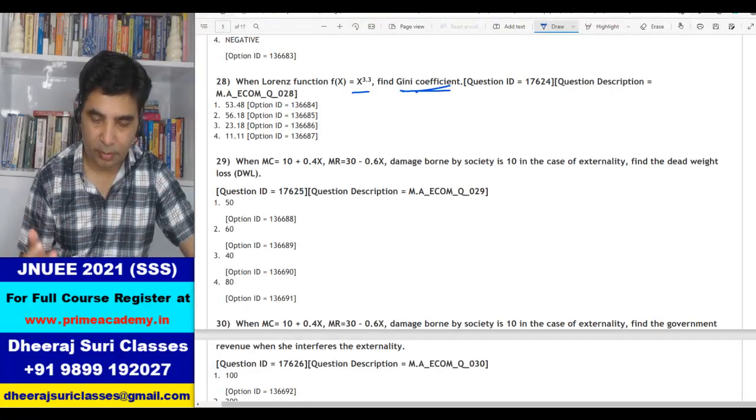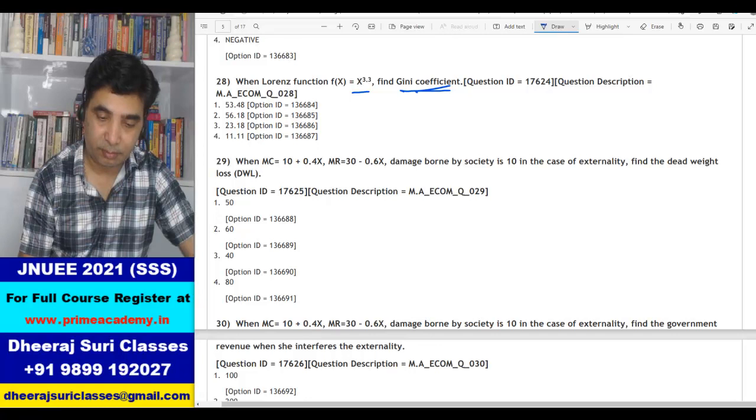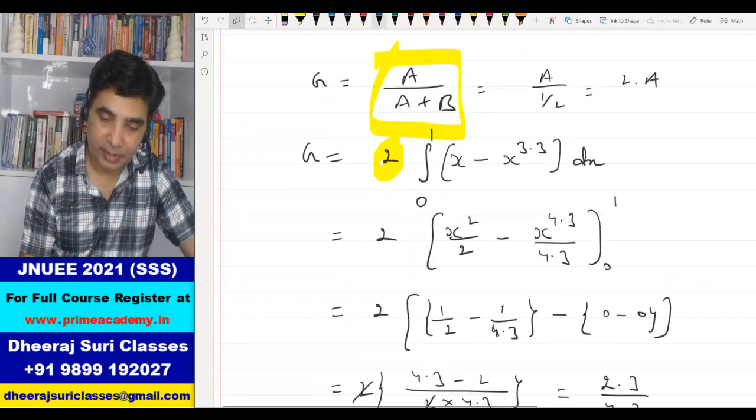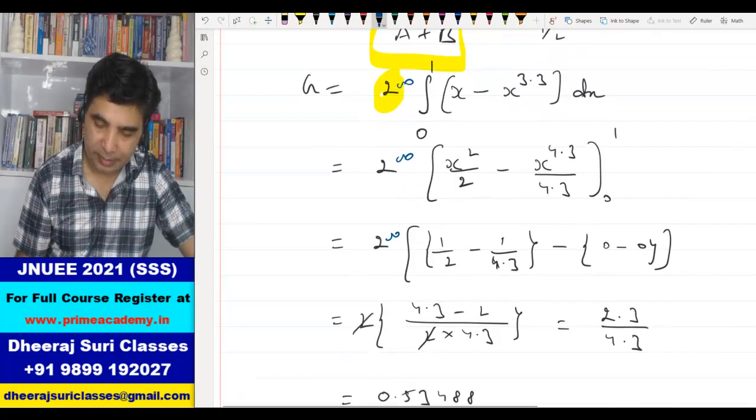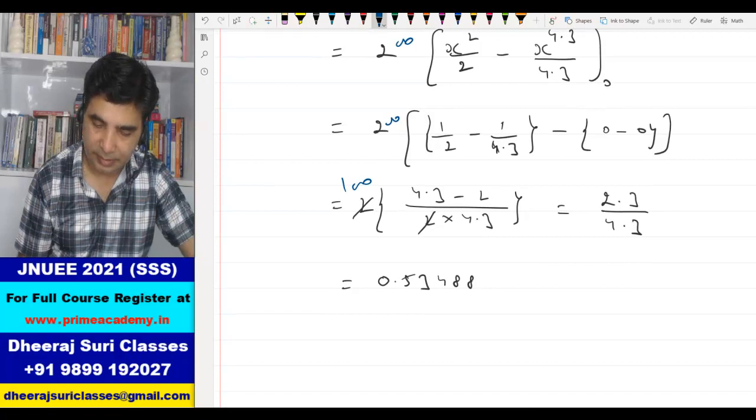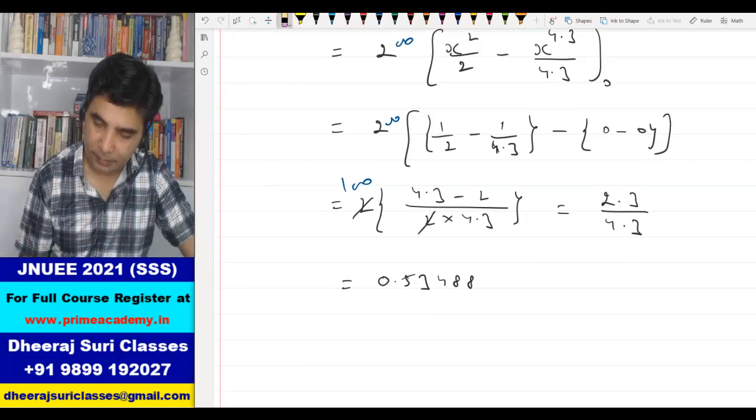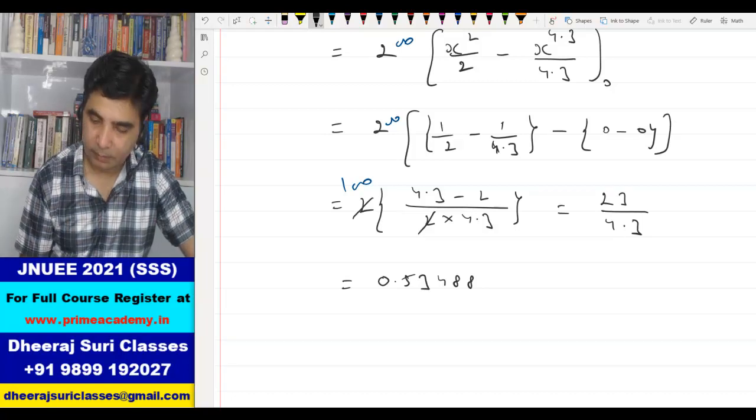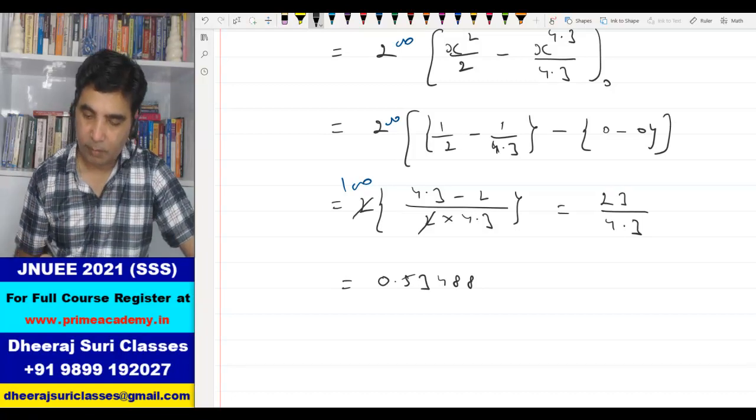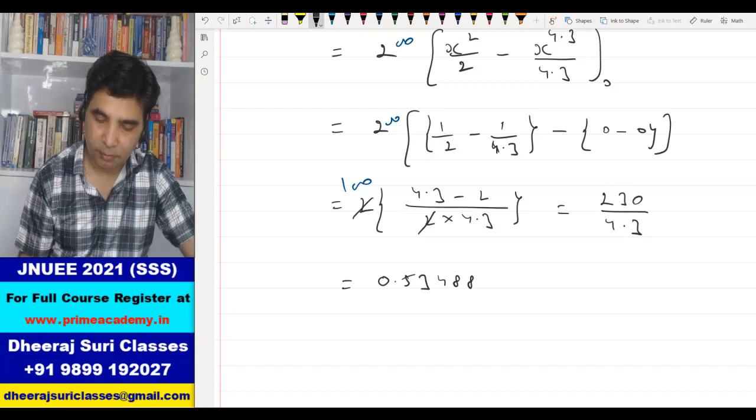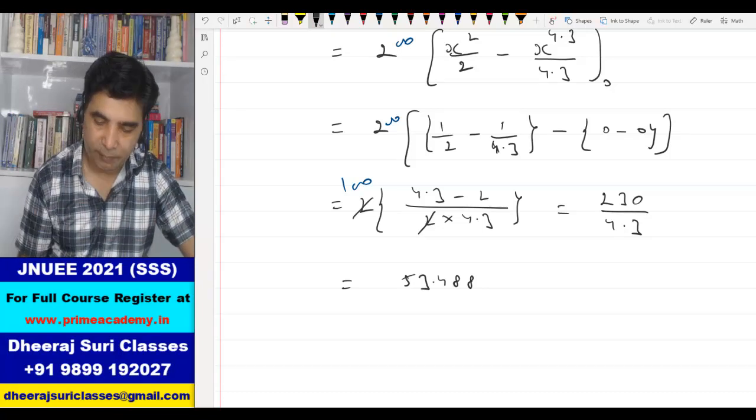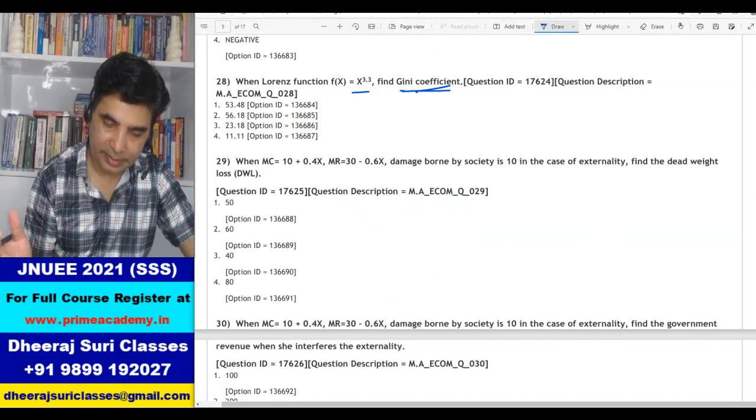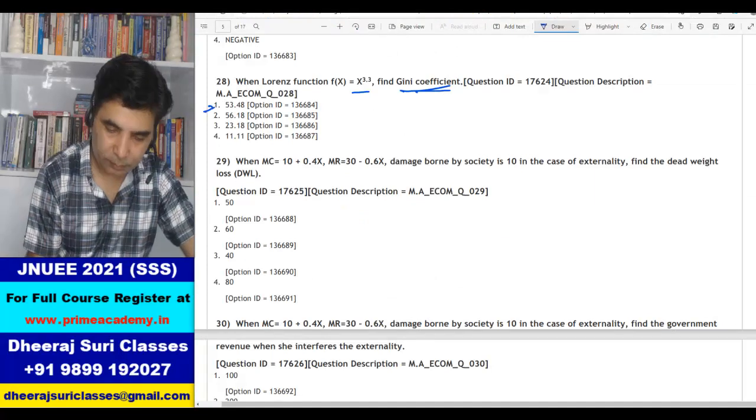Now here my answer is in percentage form. So I should multiply by 100. So Gini coefficient is this into 100, means it is 200. Now it is 230 by 4.3. So this gives you 53 point, or rather you multiply the final answer by 100. 53.488. So 53.48 is my answer. Option number 1.